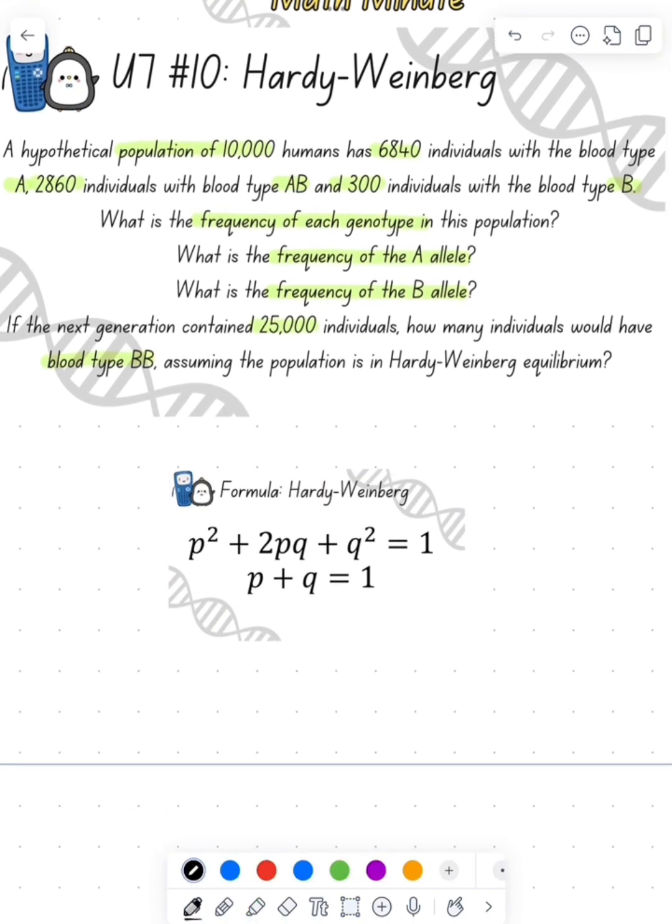And so in the question here is the formula. P squared is going to be my AA, 2PQ will be my AB, and then Q squared will be my BB. And then the P represents the A allele, and the Q represents the B allele. And now these are all frequencies.